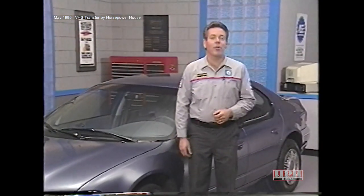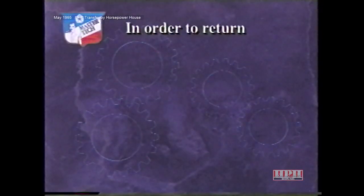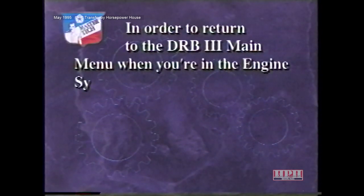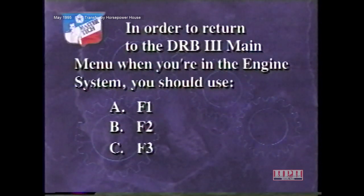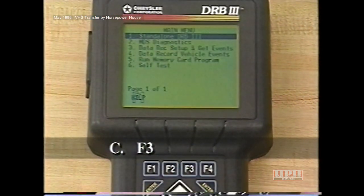In the next section, we're going to take a better look at a useful feature you may remember from a previous MasterTech — the built-in digital volt ohmmeter. But first, try to answer this question: In order to return to the DRB3 main menu when you're in the engine system, you should use A, F1; B, F2; or C, F3. The answer is C. The F3 key is used to return you to the main menu.